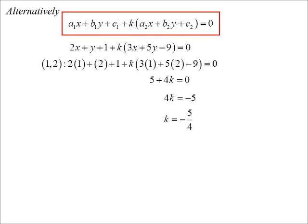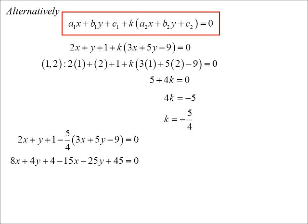And so I now know that the equation of the line is 2x plus y plus 1 minus 5 fourths of the second equation. Well, let's multiply out, tidy up, and sure enough, well, 7 goes into everything there. It does turn out to be the same line. So that's an alternative way of solving that particular type of question.